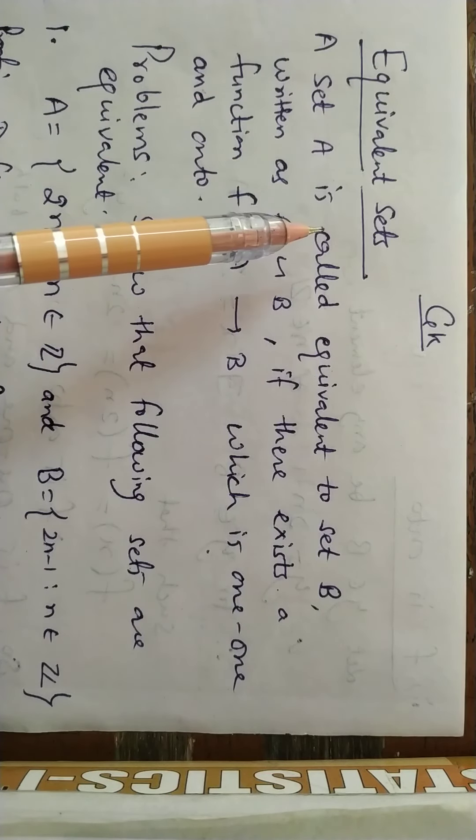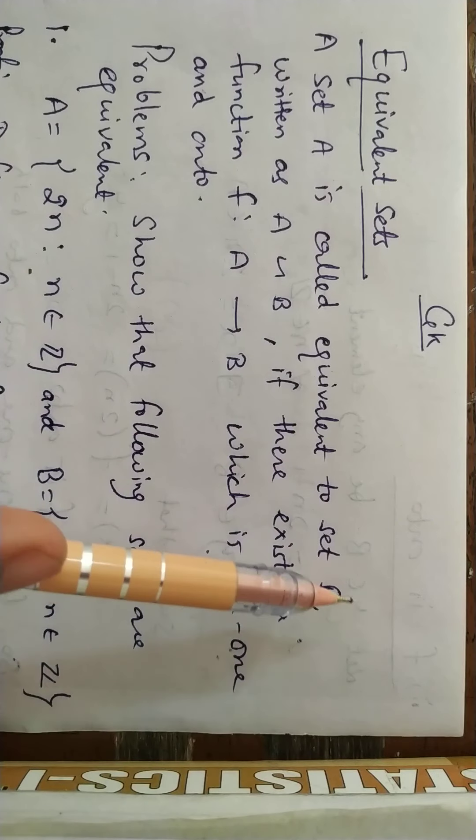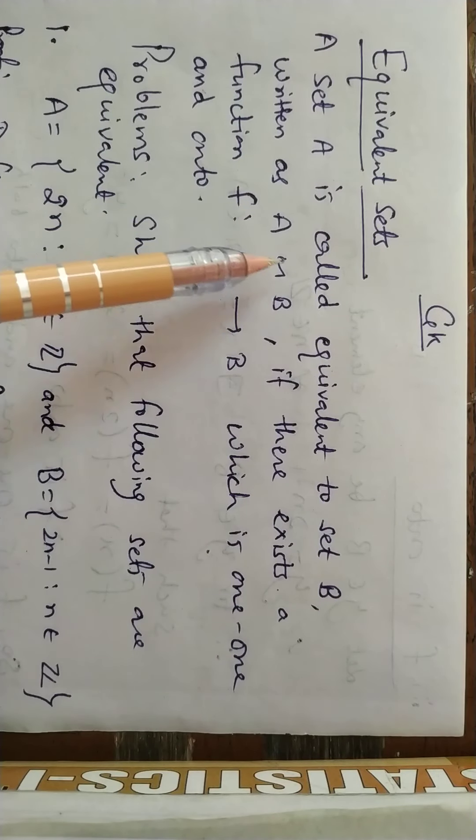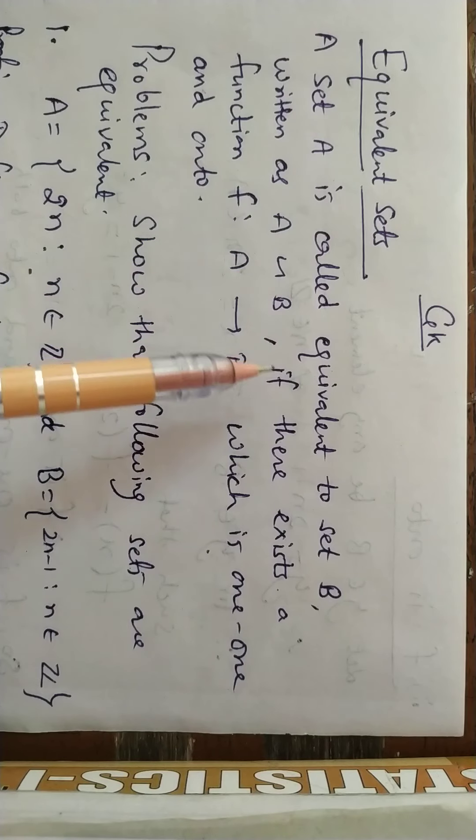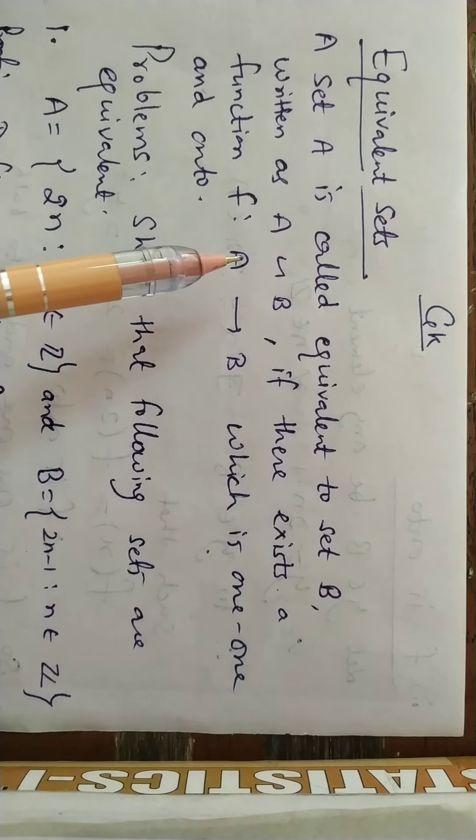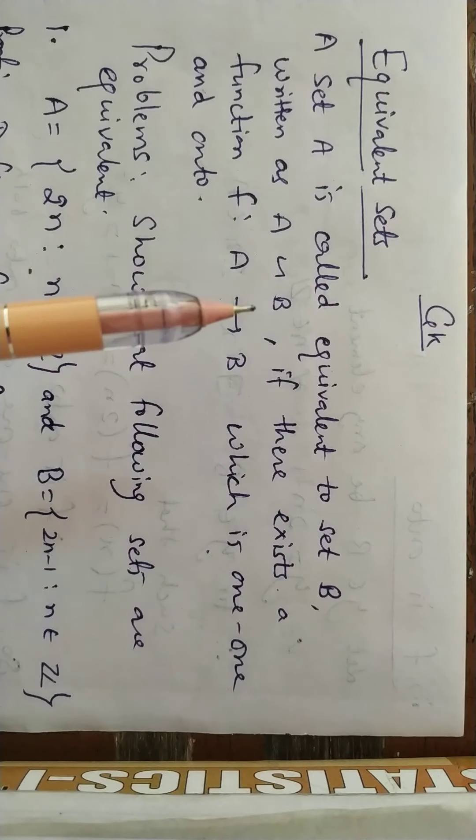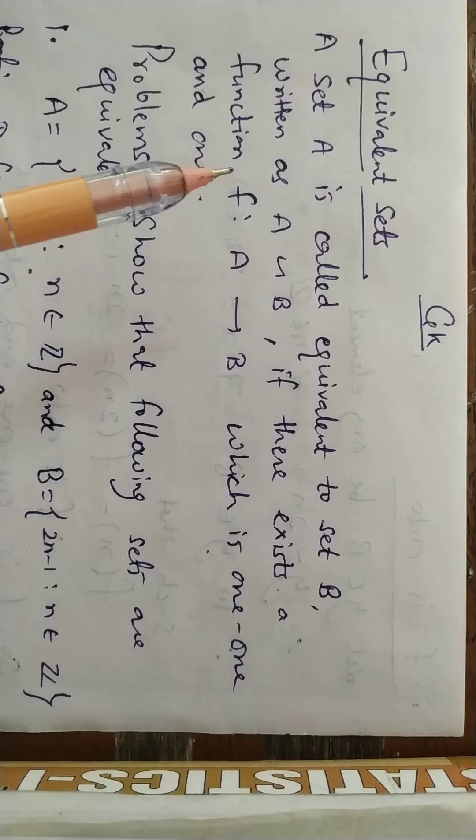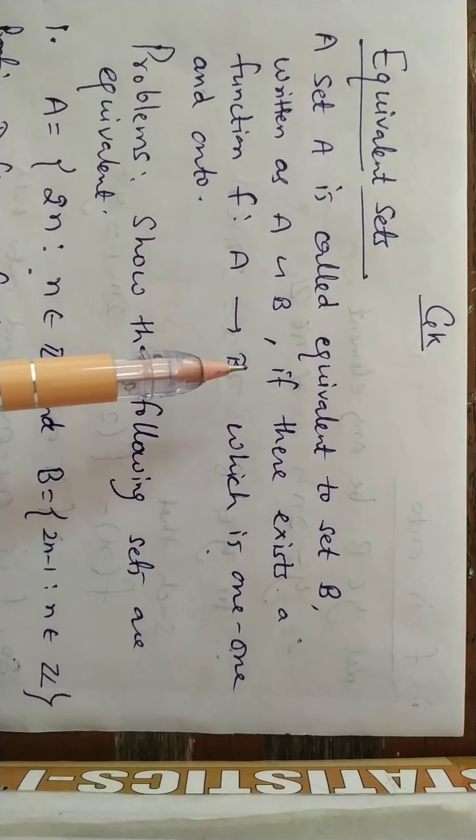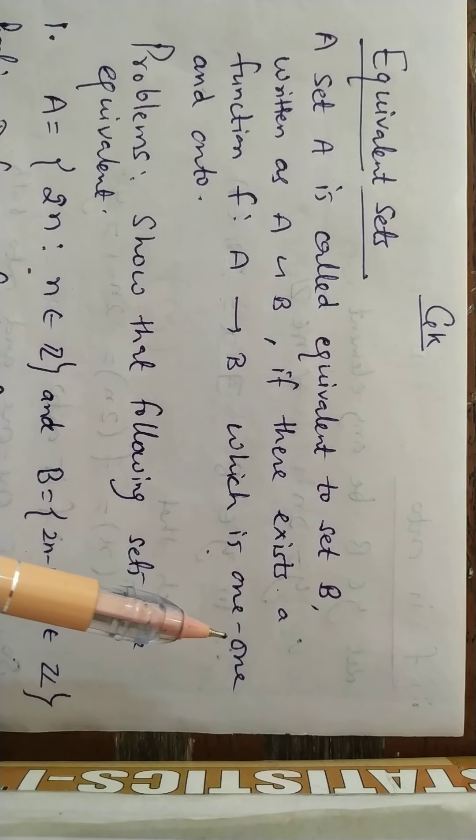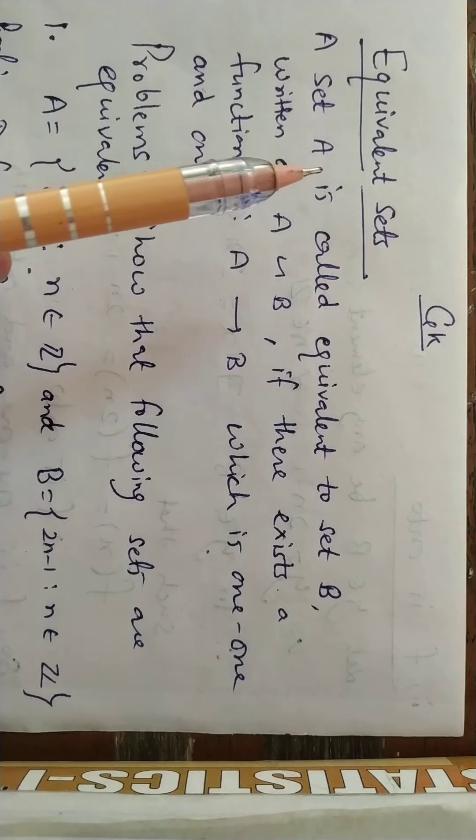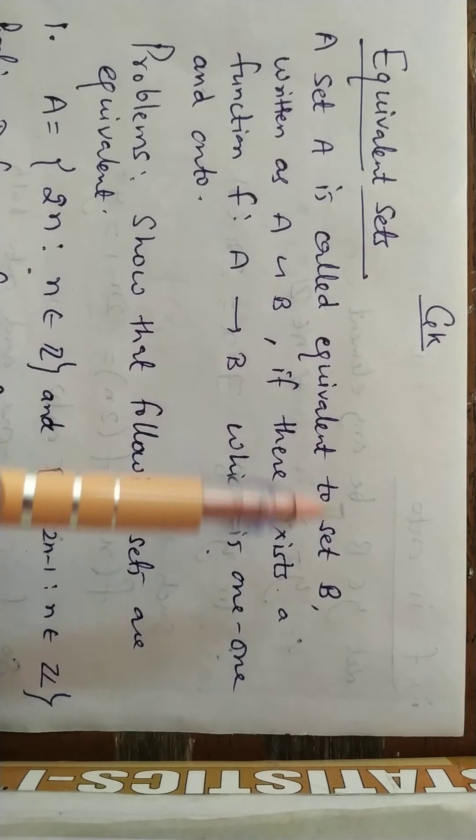A set A is called equivalent to set B, written as A equivalent to B (this is the equivalence symbol), if there exists a function f from A to B which is 1-1 and onto. If we have two sets A and B and we define a function from A to B, and if the function is 1-1 and onto, then we say that set A is equivalent to set B.